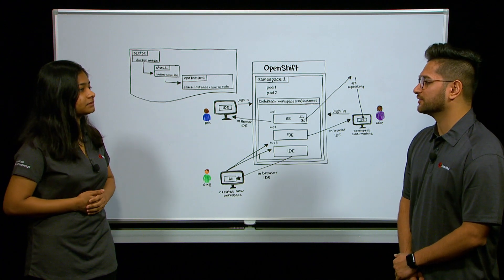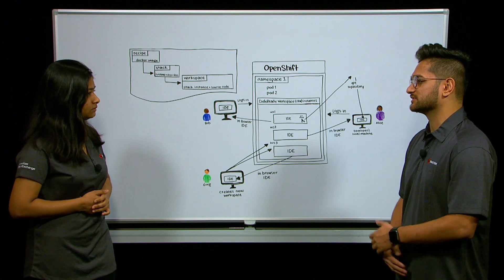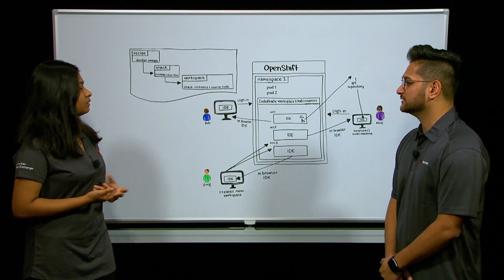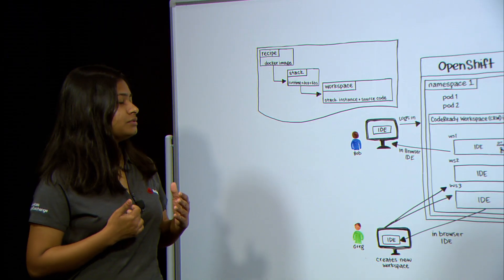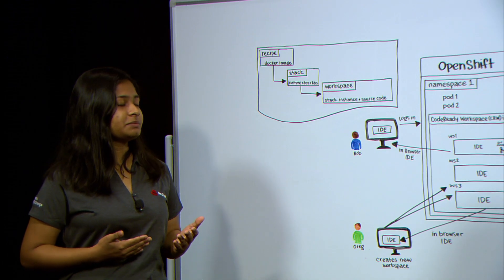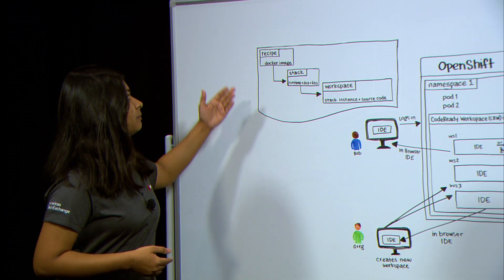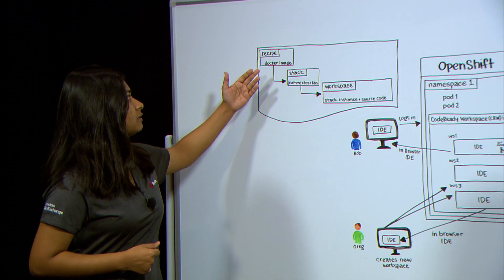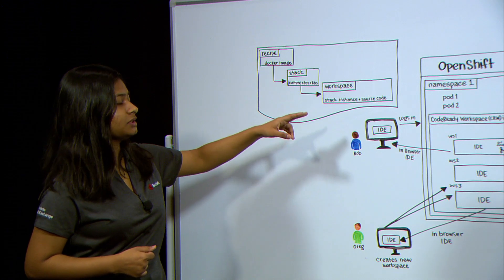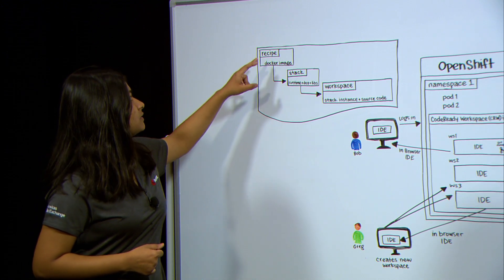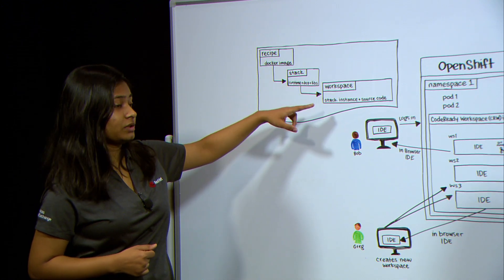So you mentioned a few new terms. Can you elaborate a little bit more on what workspace entails? To explain what workspace is, I'd point to this diagram here. It has three different key terms: recipe, stack, and workspace.